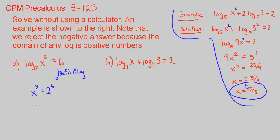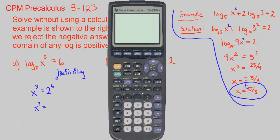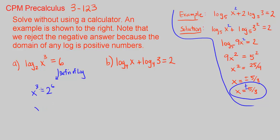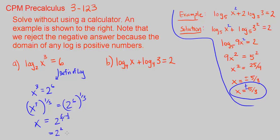We solve x cubed equals 2 to the 6 by raising both sides to the power of one third, which isolates x. So x equals 2 to the power of 6 times one third. Since 6 times one third equals 2, that's 2 to the power of 2, which is just 4. So for part A, x equals 4.